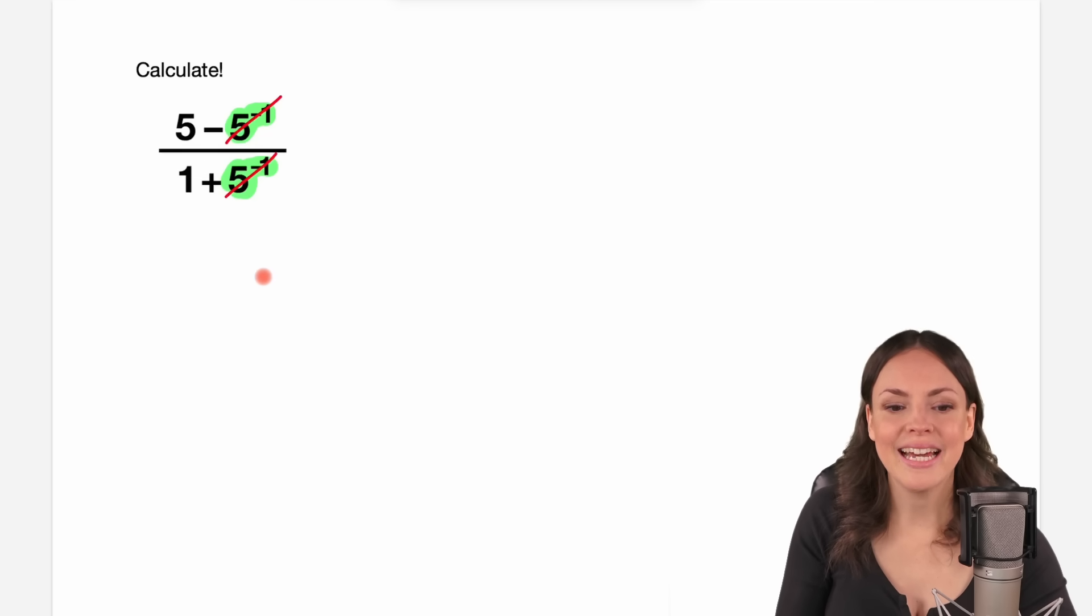The problem is that cancelling things out in a fraction is only allowed if you have a multiplication here and here as well. This is not the case in this problem here so just cancelling out is not a good idea, so what else can we do to calculate this fraction?